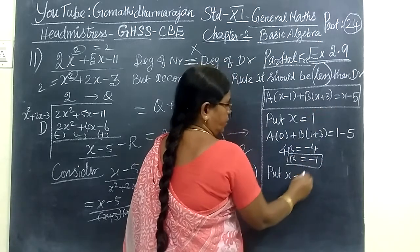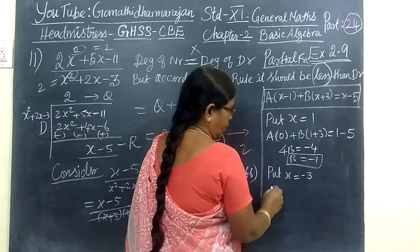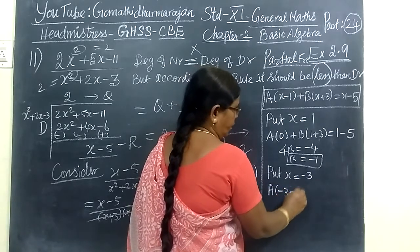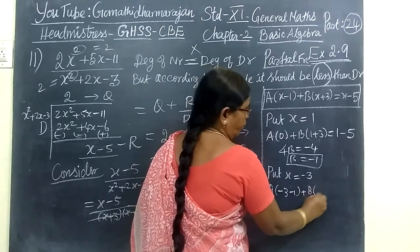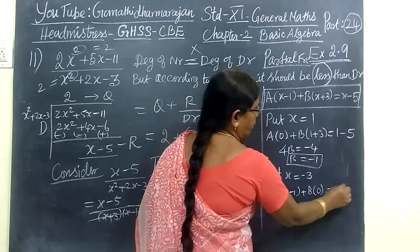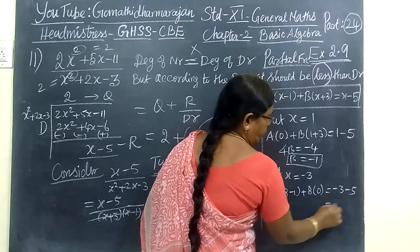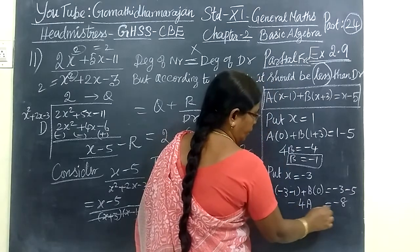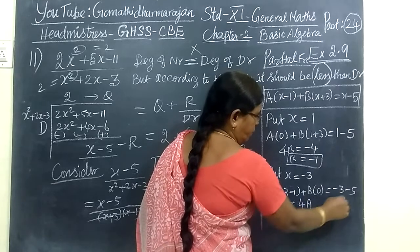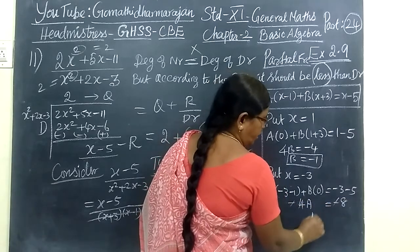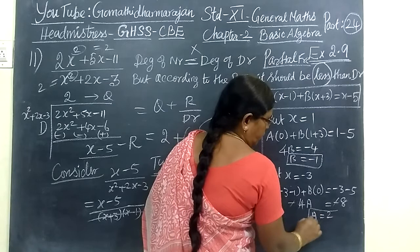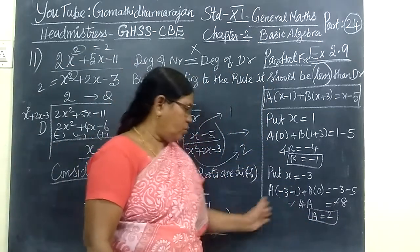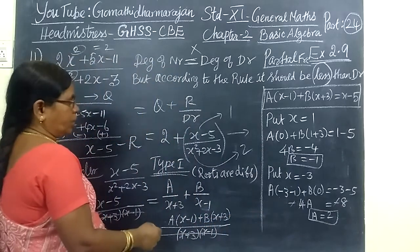Then next you substitute, put X equal to minus 3. Therefore A bracket minus 3 minus 1, opposite sign, equal to minus 3 minus 5. So minus 8. Here minus 4A. So minus minus cancel, this and this cancel. So A equal to 2. You know this very well.